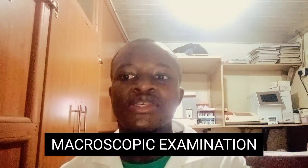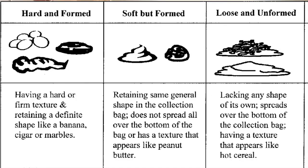The second thing we will do is macroscopic observation of the fecal sample. Macroscopic observation of the stool can give you a clue to the type of organism present. Regarding consistency: normal stools are formed, while in diarrhea and dysentery the stools are semi-solid and watery in nature. Cysts are mostly found in formed stools, while trophozoites are mostly found in watery stools.